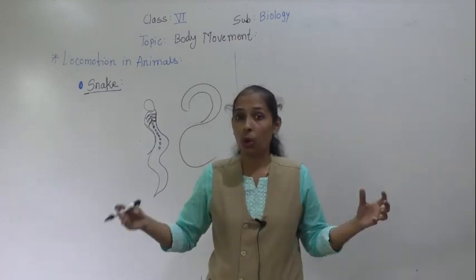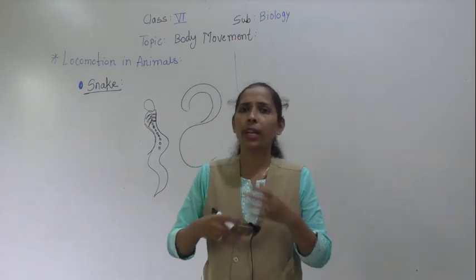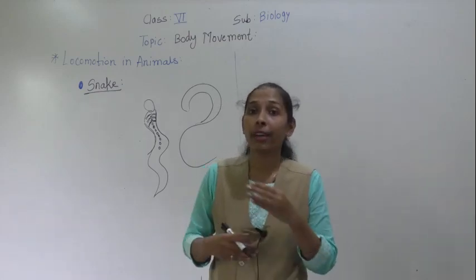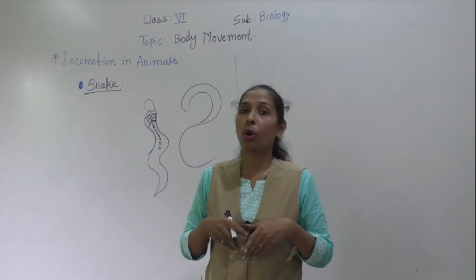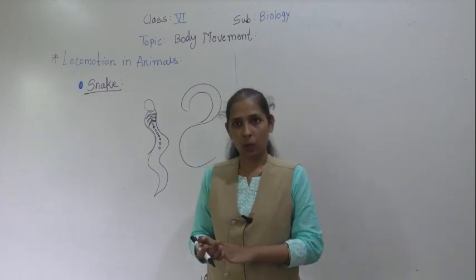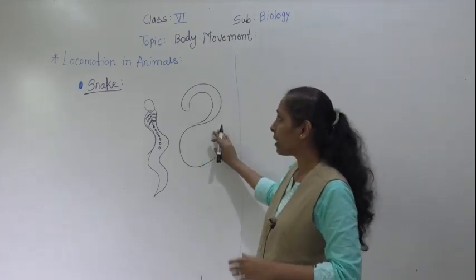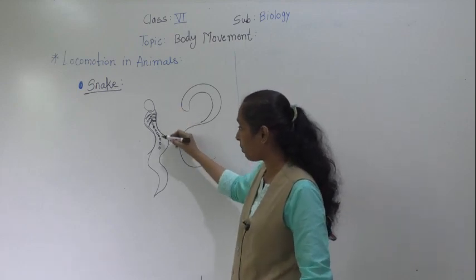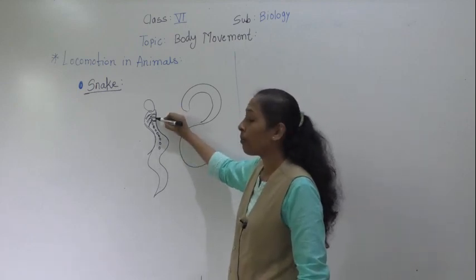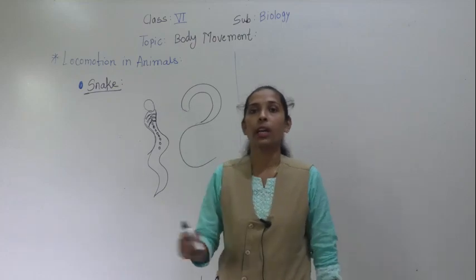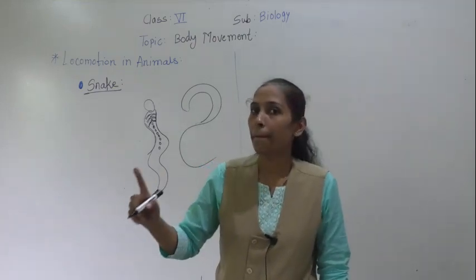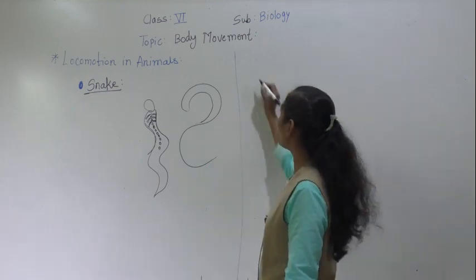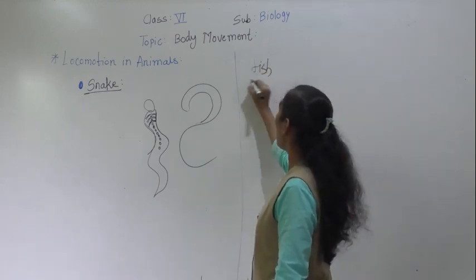Since the snake is very long, while moving it forms a large number of loops, which helps it to crawl rapidly on the ground. In this way, the snake shows locomotion with the help of a flexible vertebral column, ribs, and strong muscles.